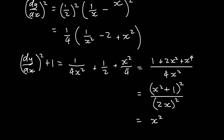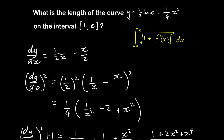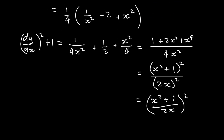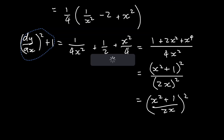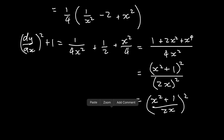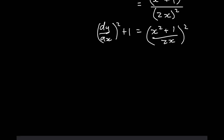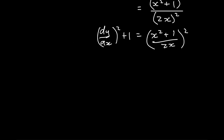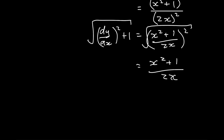So we've done the derivative, we've done the square, and we've added the 1. Now we need to take the square root. So if we copy this here, that's what it's equal to. And if we take the square root, we're just left with (x² + 1) over 2x.